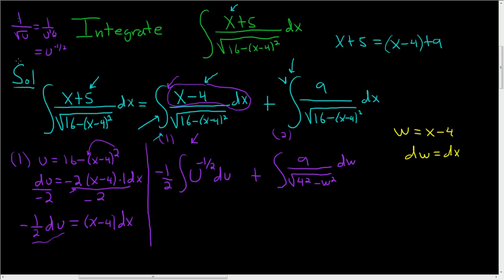Now if you forgot the formula for arc sine, I'll write it over here. It's dx divided by the square root of a squared minus x squared. And this is equal to the arc sine of x over a plus c. Okay, now we're ready to integrate.